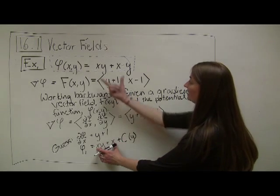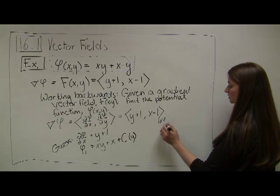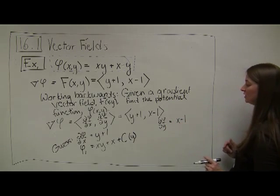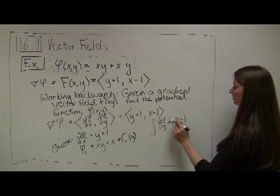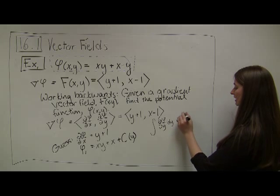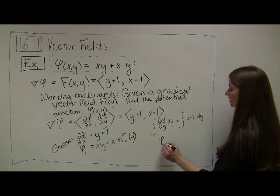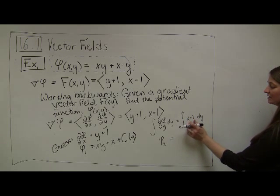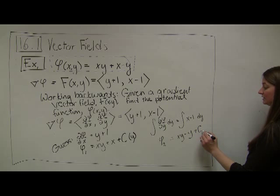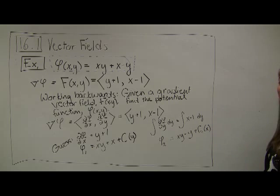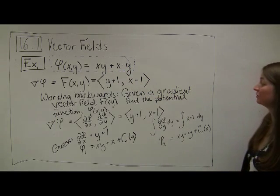This gets us part of the way there — it gives us the first couple of terms. But we need to use more information: the partial derivative of phi with respect to y equals x minus 1. So I anti-differentiate with respect to y — I take the integral of both sides with respect to y. When I anti-differentiate with respect to y, treating x and negative 1 as constants, I get phi sub two equal to xy minus y plus a constant that's a function of x. Now that I have both pieces, I need to put them together to find the original potential function.